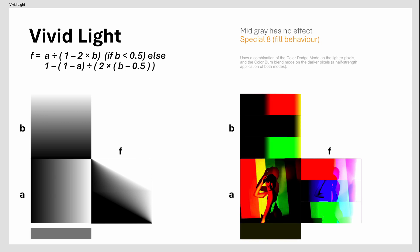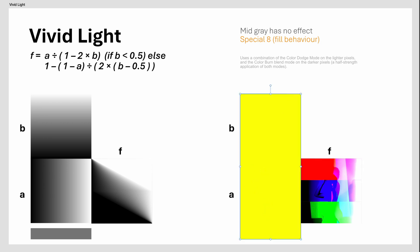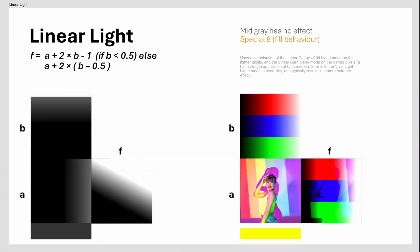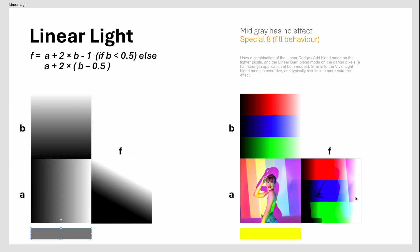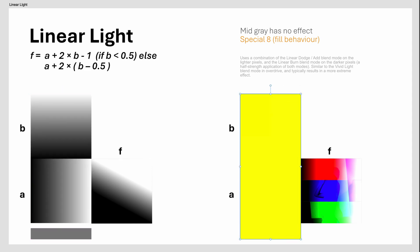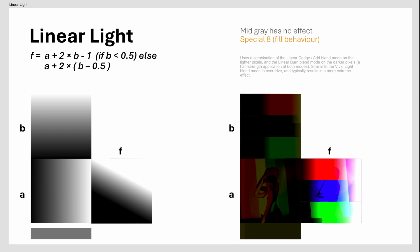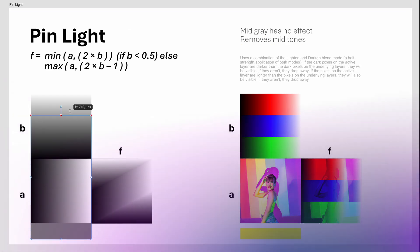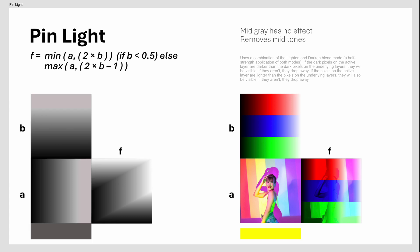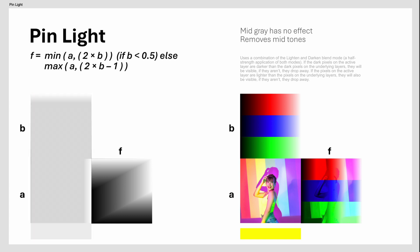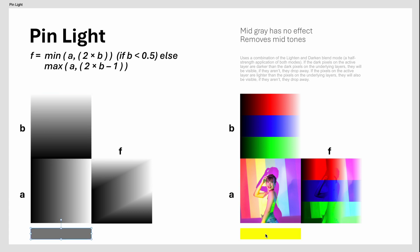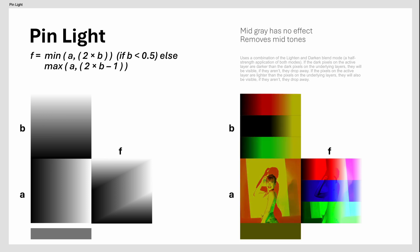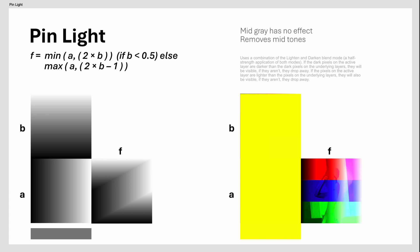Most of the time when Vivid Light is used, it will be used with a low fill percentage. The Linear Light Blend Mode is similar to Vivid Light but uses the Linear Dodge and Linear Burn blend modes — usually a more dimmed-down version of Vivid Light. Just like Vivid Light, a low fill percentage can create amazing results. The Pin Light Blend Mode is a combination of Darken and Lighten blend modes. It creates distinct boundaries between light and dark regions. When you apply the same image to itself in Pin Light blend mode, the image will not change — this is not the case with the other contrast blend modes.